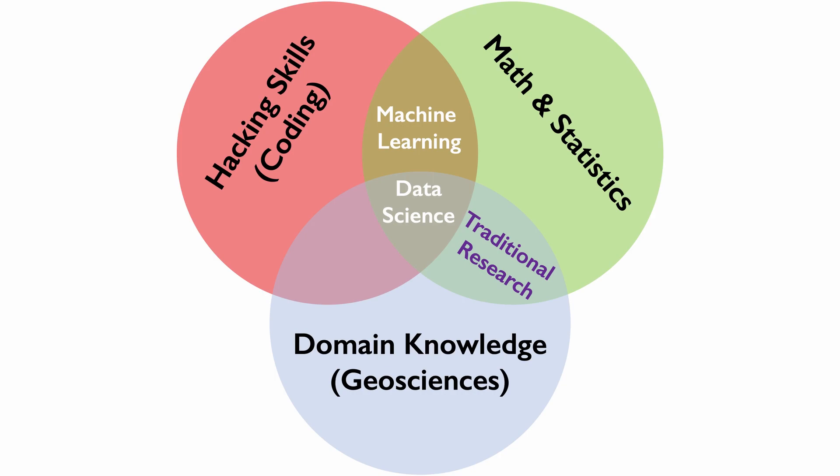Going back to the Venn diagram, there is one zone that is missing — the intersection between domain knowledge and hacking skills. This is known as the danger zone. If you know enough about coding and enough about geology, but you don't really know much about math and statistics, or at the very least what underlies the algorithm you're going to use, then you're in trouble. You can come up with a lot of very convincing results that are meaningless and dangerous. The goal for this course will be to avoid going into the danger zone — to know just enough about the math, the statistics, and the algorithms we use to know when we overfit, underfit, or encounter other problems.